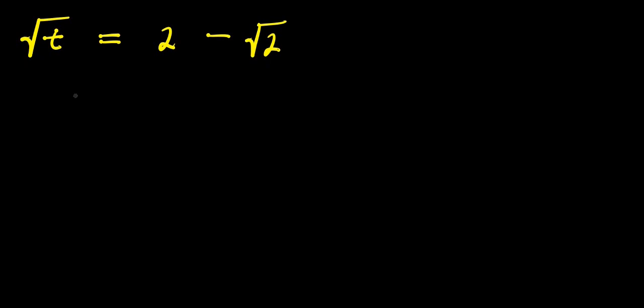Hello. How to solve this radical problem — we have root t equals 2 minus root 2. We are solving for all values of t that satisfy this equation.